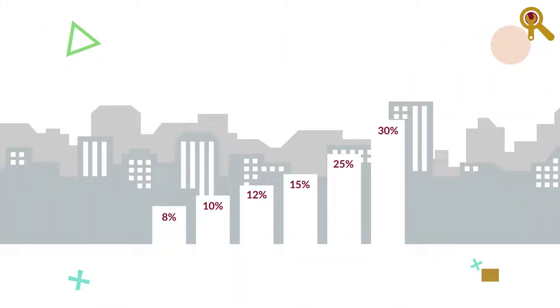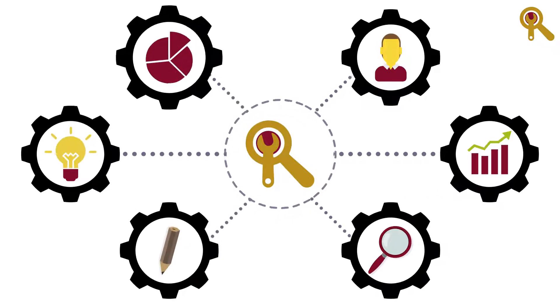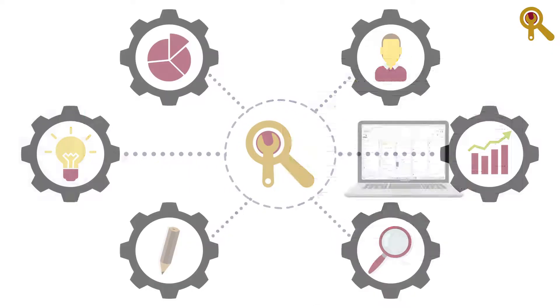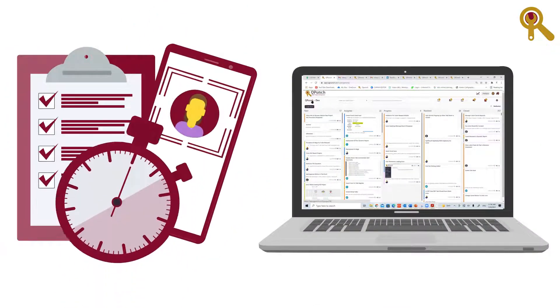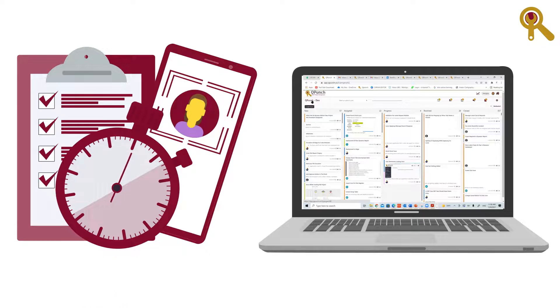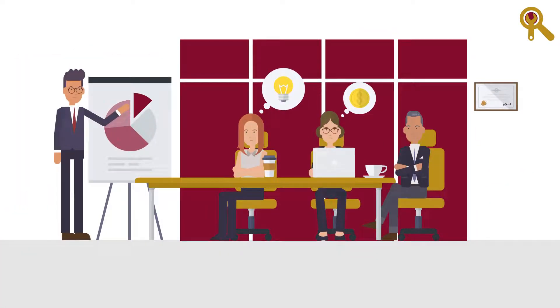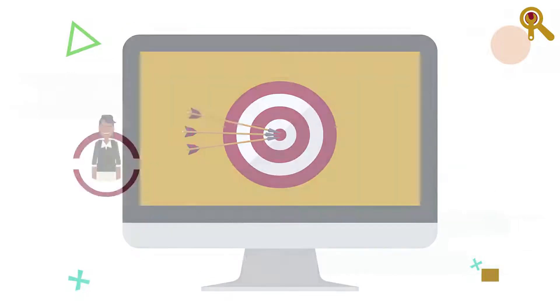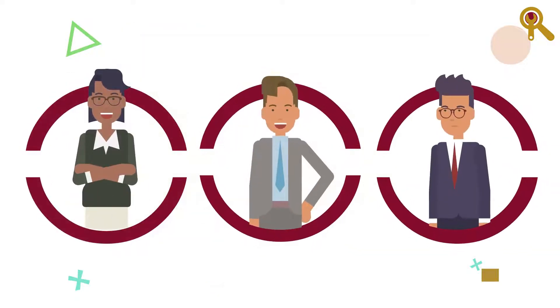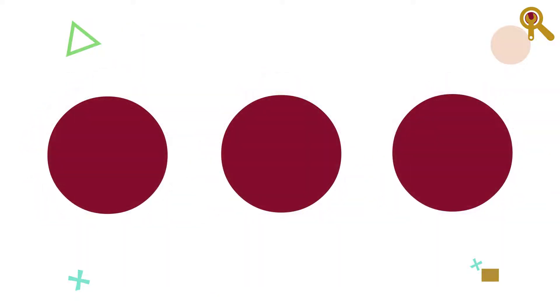Qpunch is a smart project management application that instantly reports relevant information in real time as projects are progressing and teams are encountering challenges. Our mission is to ensure that teams aren't divided in silos.